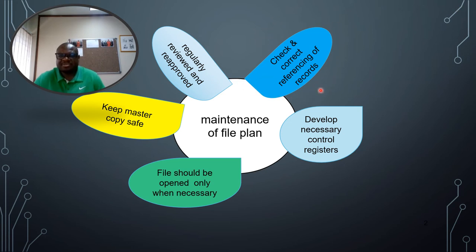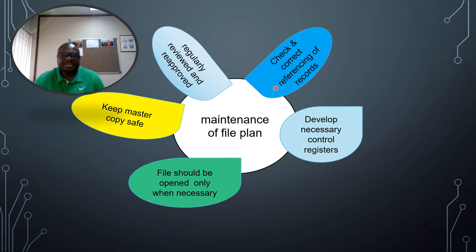This ensures that the record is filed in the correct file, to avoid accidental disposal during the disposal period. When disposal comes, we are not going to look at records one by one — files will just be retrieved according to their retention periods and disposal will happen.